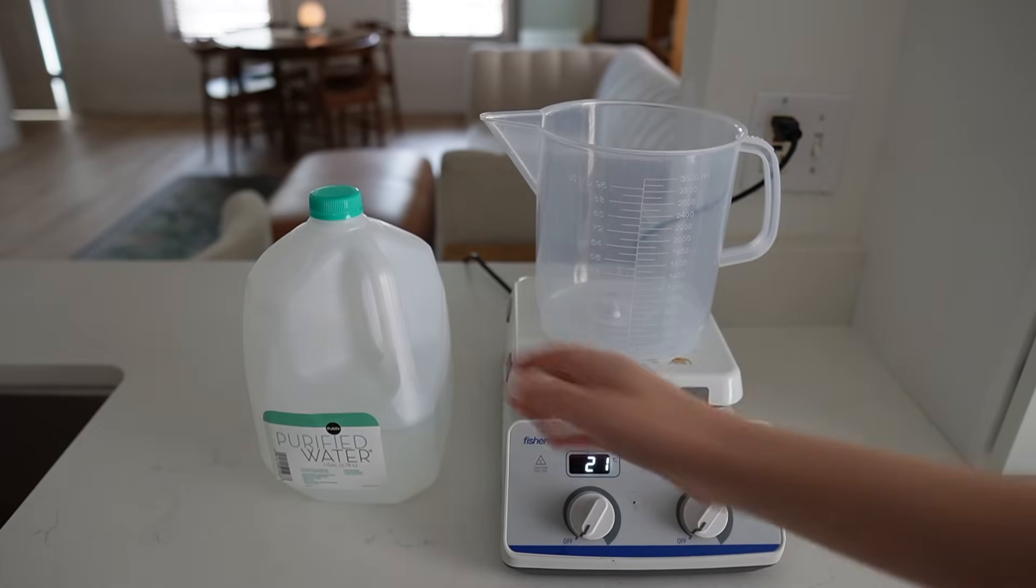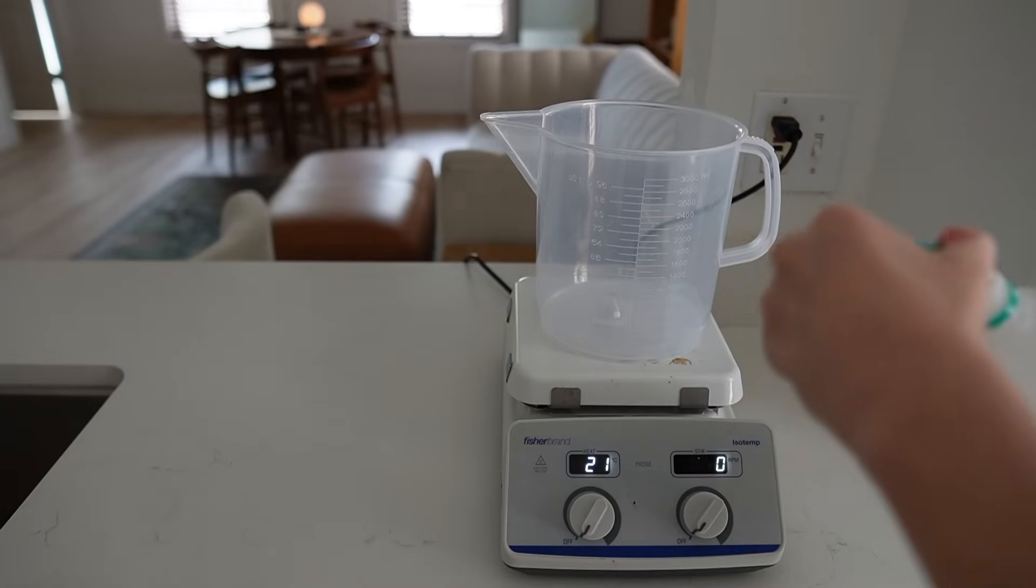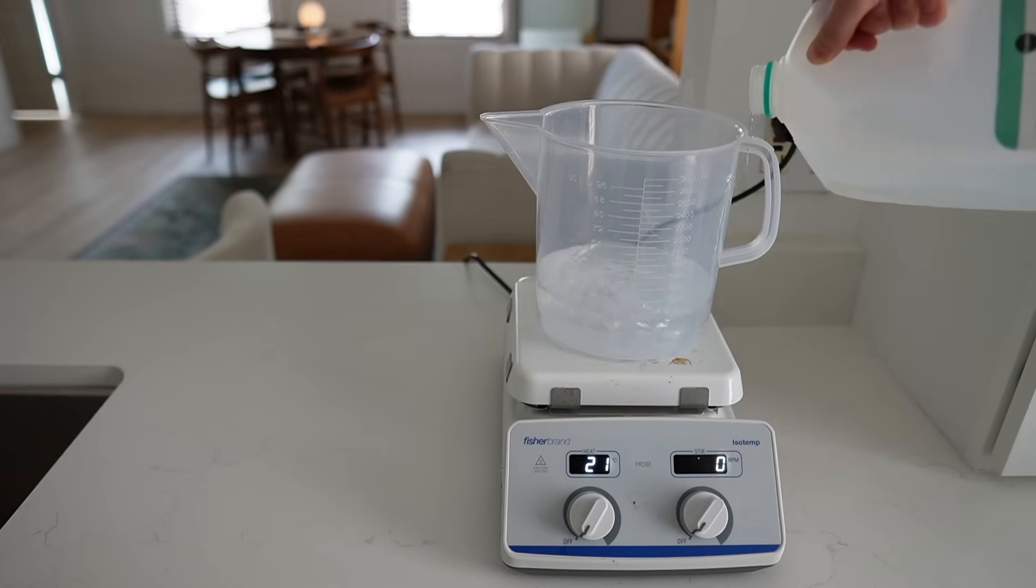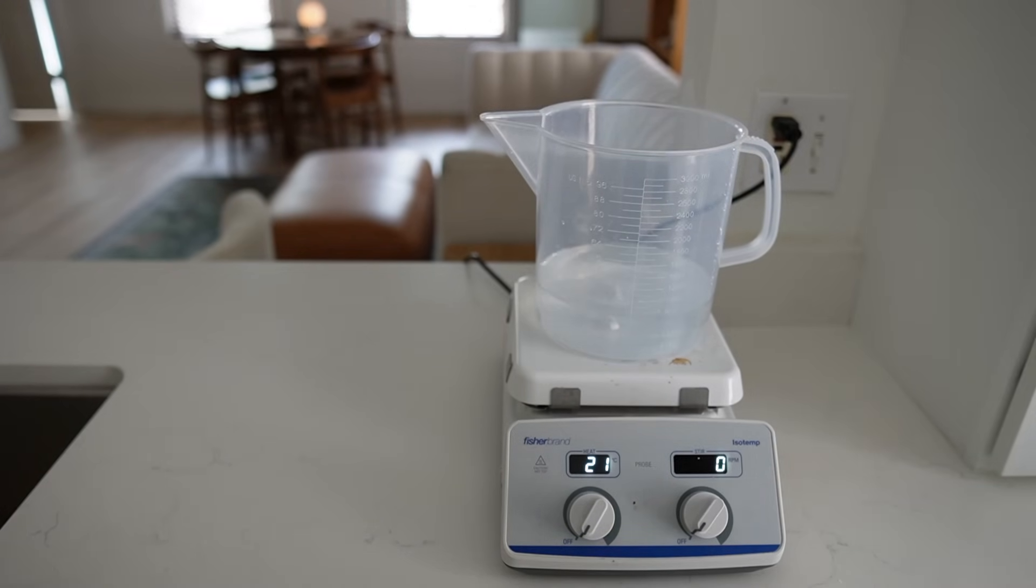Like any other tissue culture procedure, the first step is going to be for us to prepare and sterilize our tissue culture media. To make one liter of TC media for germinating seeds, I start with a container of 800 milliliters of distilled water.